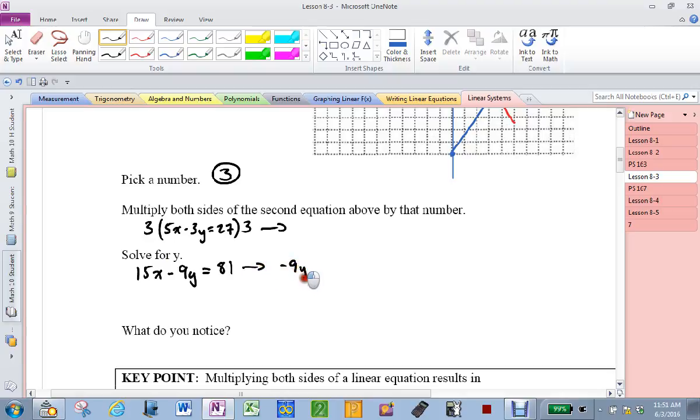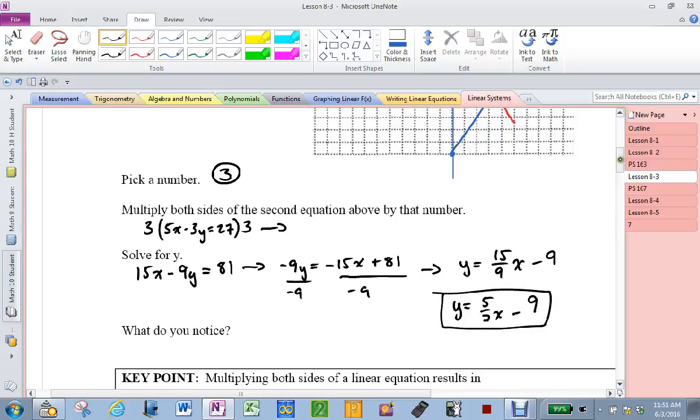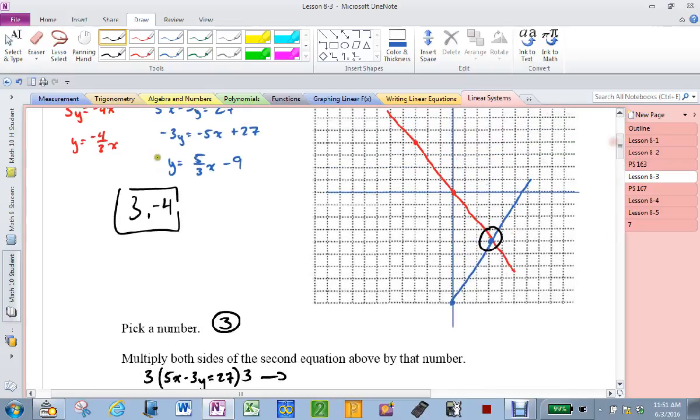So, negative 9y equals negative 15x plus 81. Divide by negative 9 and y equals, two negatives make a positive, 15 over 9x minus 9. Then, I simplify, 15 over 9 becomes 5 thirds x minus 9. What did you notice about those two situations?